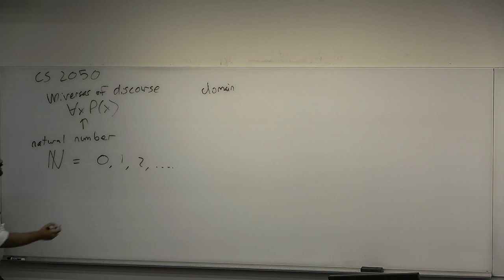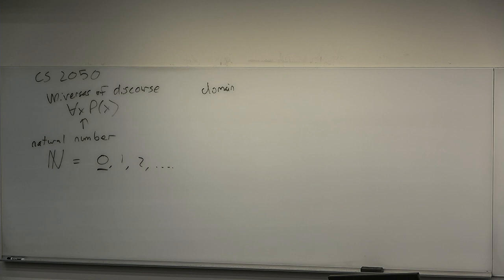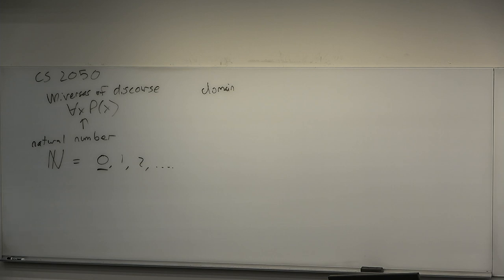Depending on who you are, whether 0 is a natural number is a controversial question. Most people would say no, 0 is not a natural number, because they're concerned with statements over natural numbers involving number theory. Zero can be an edge case headache — division by 0 is a big problem. If you take a natural number and divide by another natural number you should get a rational number, except when 0 is there.